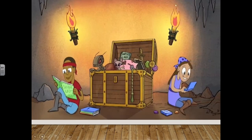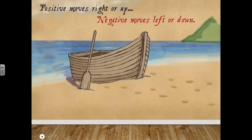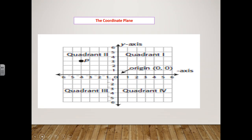Okay, guys, we've finished the video — I hope you liked it. Now, looking at the coordinate plane, we have four sections. Each one is called a quadrant: quadrant one, quadrant two, quadrant three, and quadrant four.